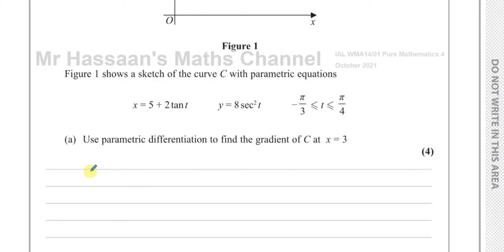We have to use parametric differentiation. The gradient of a function is dy dx. That's our objective, to find the change of y with respect to x. Now dy dx can be rewritten in terms of parametric form: you can find what dy dt is, and you can multiply that by dt dx. And that will leave you with dy dx.